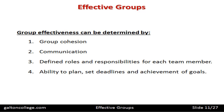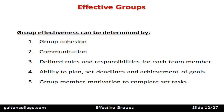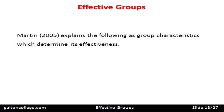Group effectiveness can be determined by the ability to organize meetings, come up with coherent plans and logical procedures, set realistic deadlines, and achieve the goals they set out to achieve. Group member motivation to complete the tasks is also key — what can be done to improve motivation within the group? Martin (2005) explains the following as group characteristics which determine effectiveness.